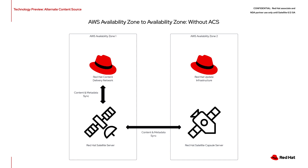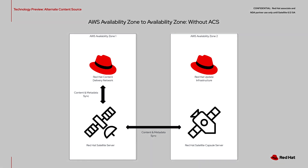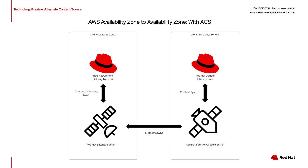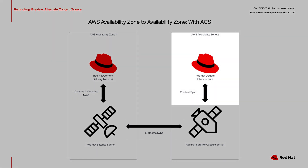Here's a diagram to demonstrate a use case for alternate content sources. We have a Satellite server situated in availability zone 1 and a capsule in availability zone 2. In AZ1, we'll synchronize content between the Satellite server and the Red Hat content delivery network, then synchronize content and metadata with the capsule server in availability zone 2. Data transmission between availability zones results in ingress and egress data transfer charges. With alternate content sources, only metadata is synchronized between Satellite and capsule. Capsule content can be downloaded from the Red Hat update infrastructure in availability zone 2.